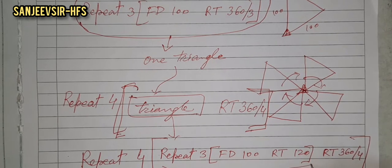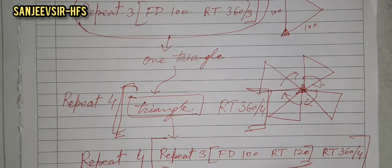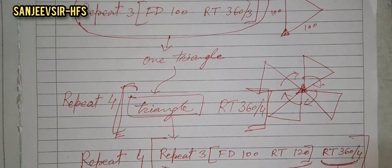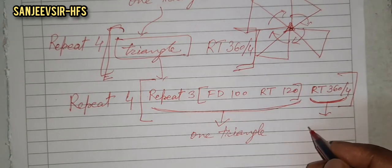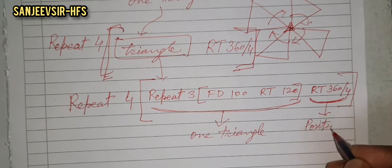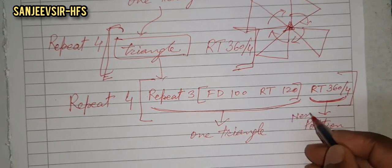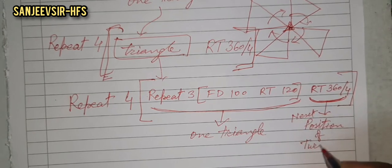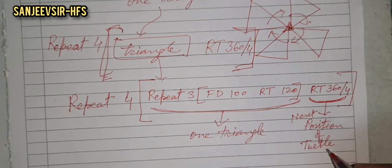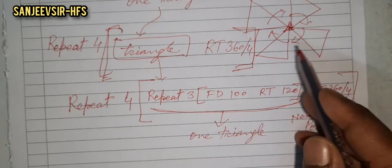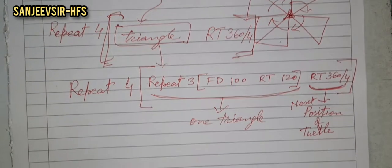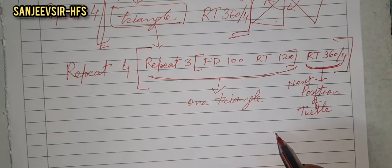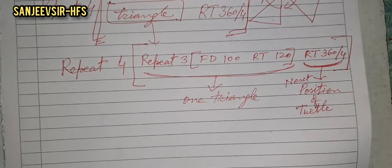The inner part draws one triangle, and the RT 360/4 at the end positions the turtle — that is, changes the direction of the turtle — so it can draw the next triangle.